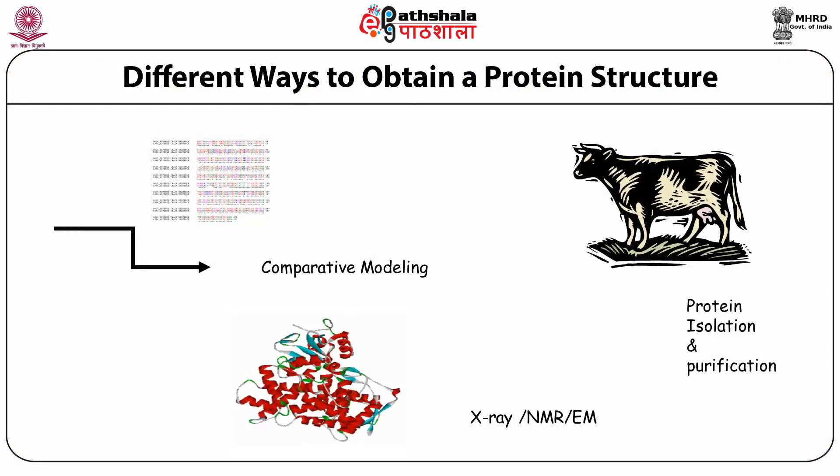Now there are different ways to obtain a protein structure. One could isolate a protein, maybe from an animal source, or more often nowadays, after overproduction of the protein in some bacterial cell. Then we take out the protein and experimentally determine the structure using either X-ray crystallography, NMR spectroscopy, or electron microscopy. This is the experimental route.